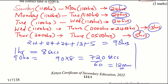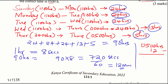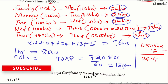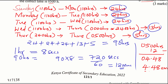Now to get the time shown on the watch, we take 05:00 hours and subtract 12 minutes. This gives 04:48. Written in the 12-hour clock system, this will be 4:48 AM. So that is how you solve that question.